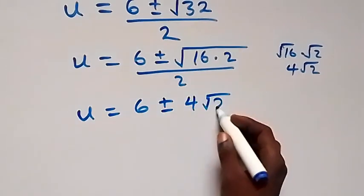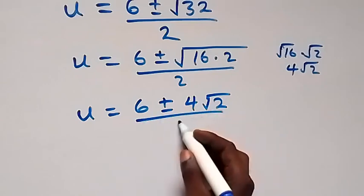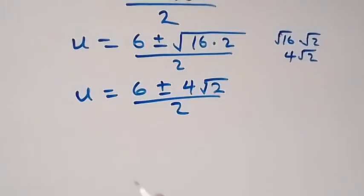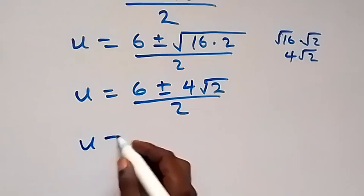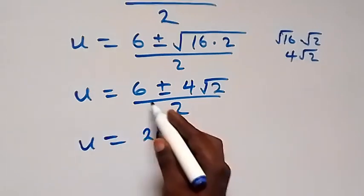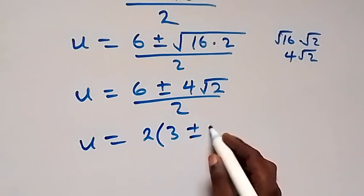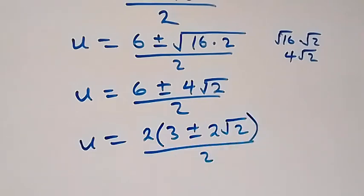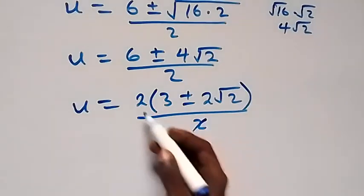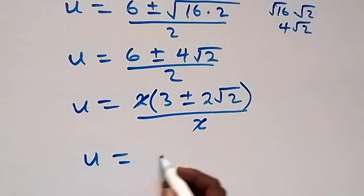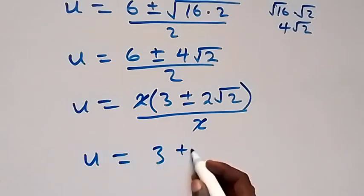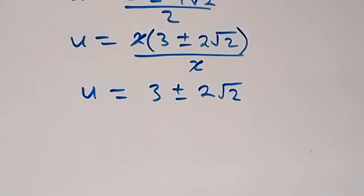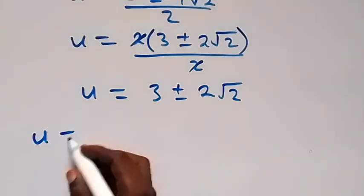So we have u equals to 6 plus or minus 4 root 2, over 2. We can factor 2 out, giving u equals 2 times bracket 3 plus or minus 2 root 2, over 2. The 2 cancels out, and we have u now equals to 3 plus or minus 2 root 2.